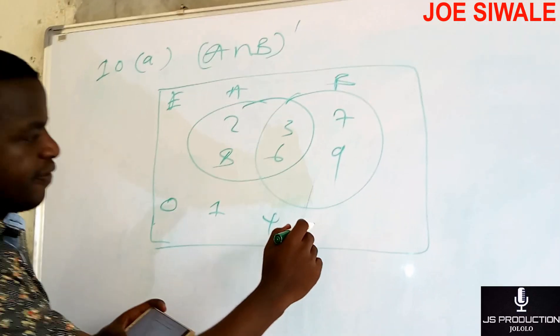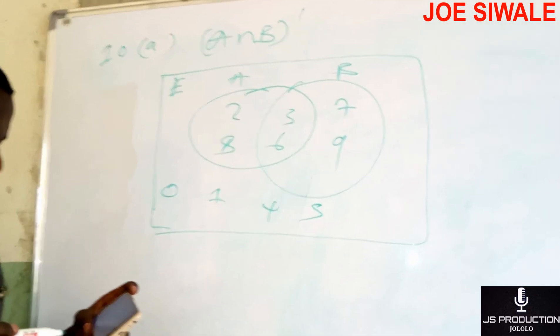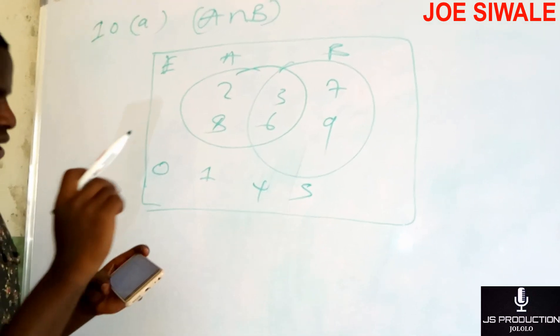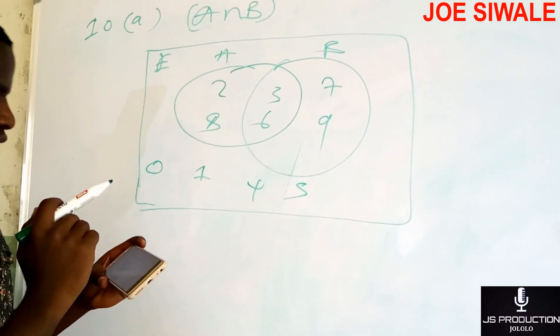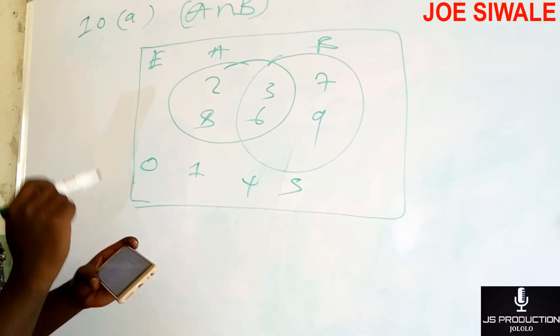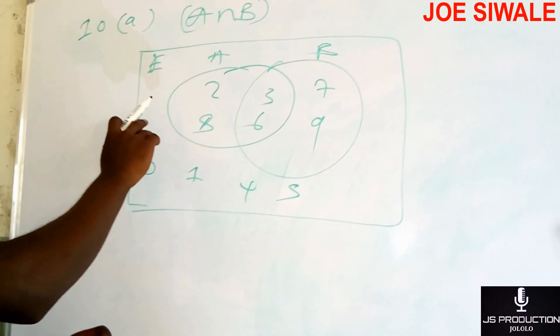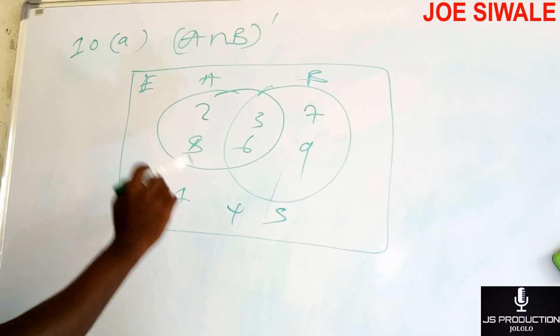4, 5, I have 6 there, I have 7, I have 8, and I have 9. So in the universal set, I'm going to have 0, 1, 4, 5.